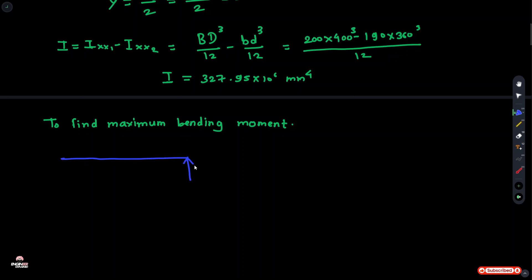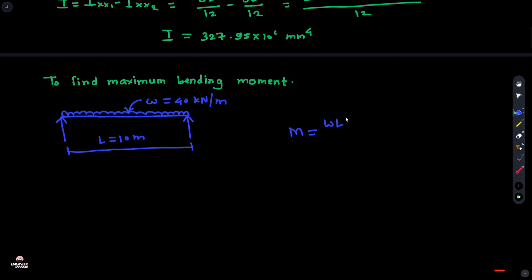First we draw the diagram. This is our simply supported beam with uniformly distributed load W equal to 40 kilonewtons per meter, and total length is 10 meters. The maximum moment is WL²/8.